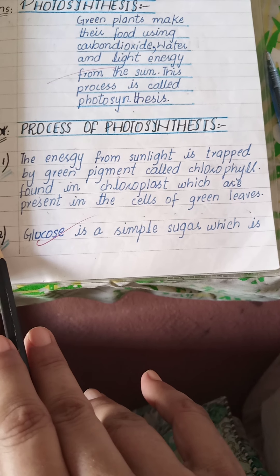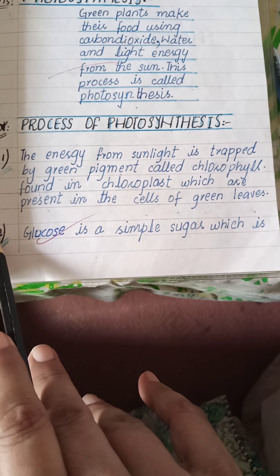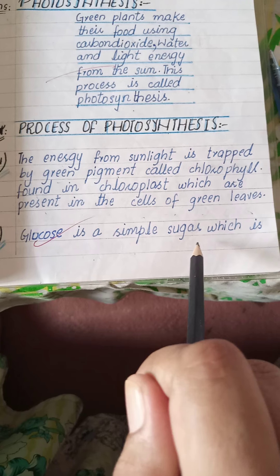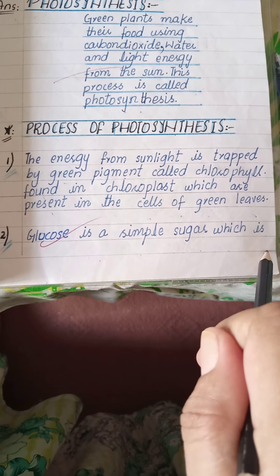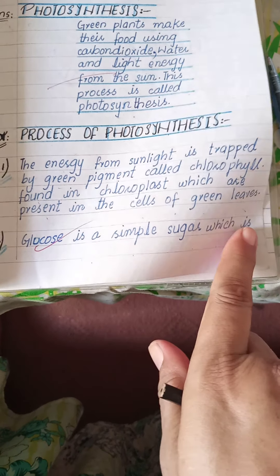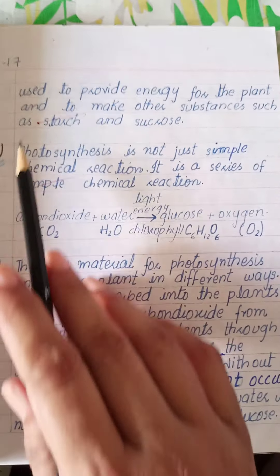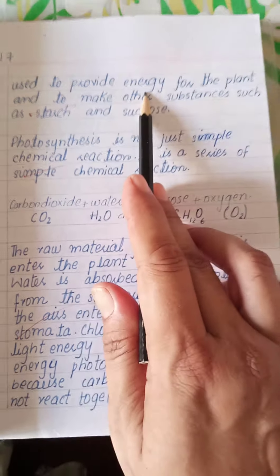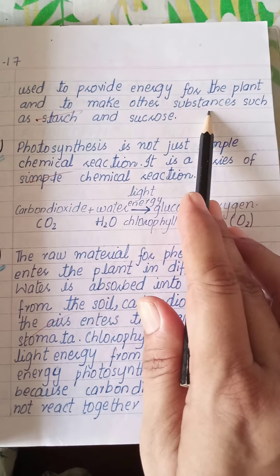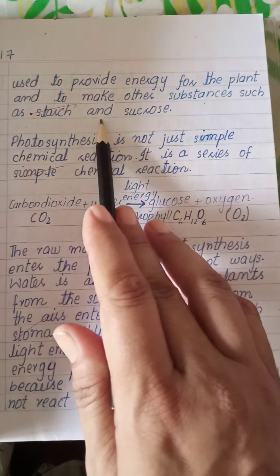Point number two: glucose is a simple sugar which is used to provide energy for the plant and to make other substances such as starch and sucrose.